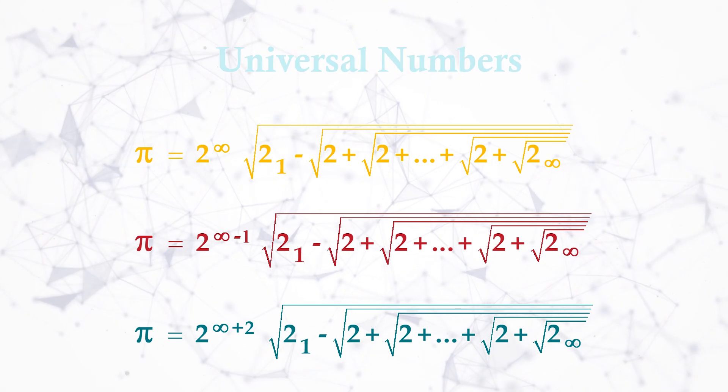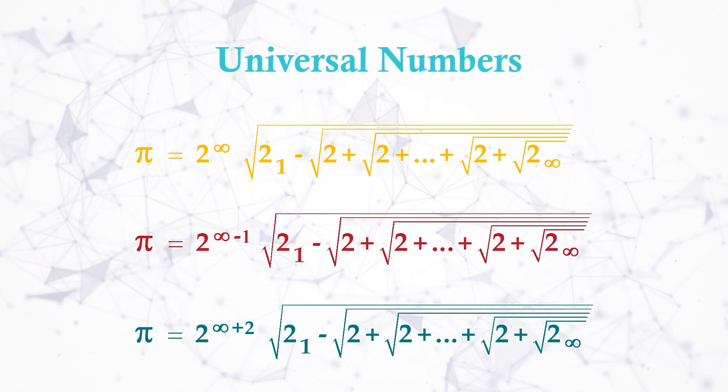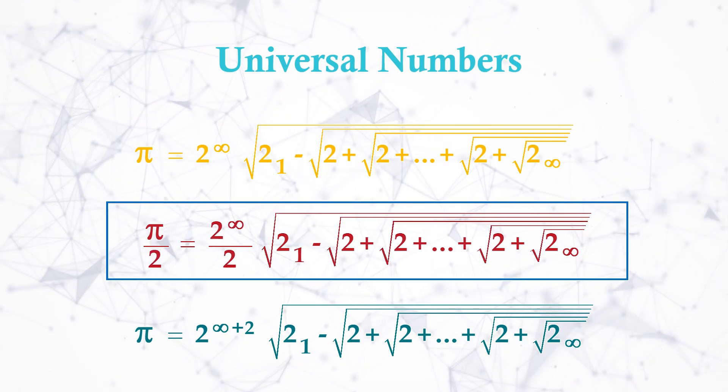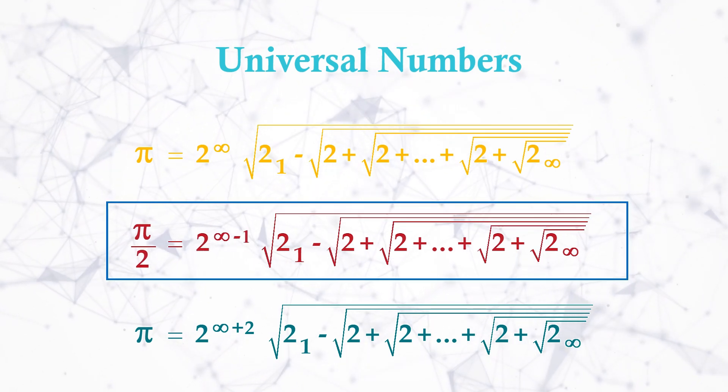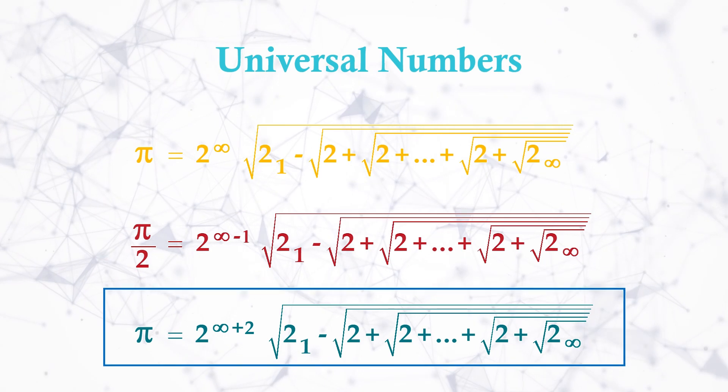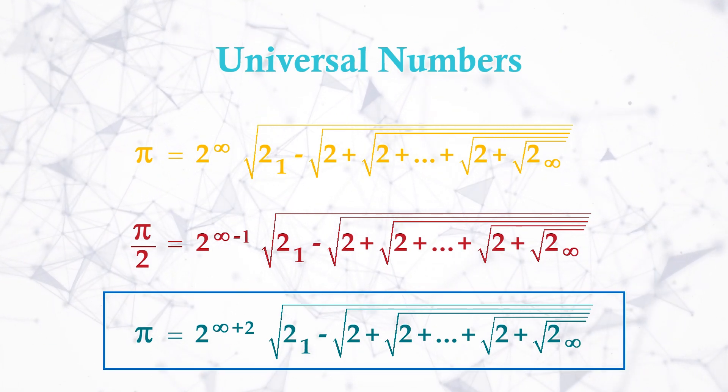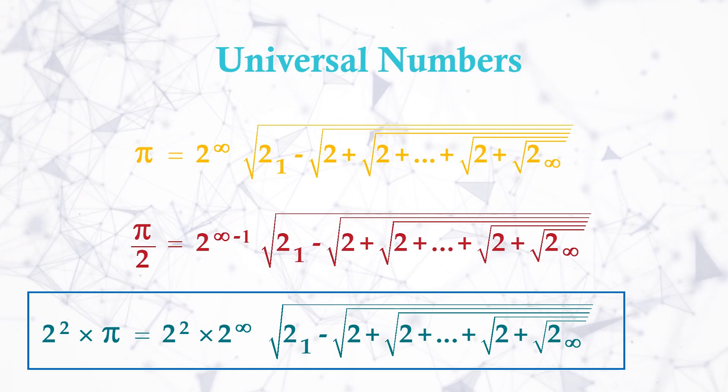But as per universal numbers, we can remove -1 from infinity only if we divide both side by 2, and so solution will be π/2. Also, we can add +2 here with infinity in this formula only if we multiply both side by 4. And in this case, the solution will be 4π.